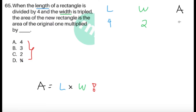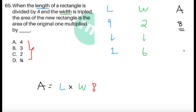Using the formula area equals length times width: 4 times 2 gives us 8. So this is the area of the original rectangle. Now, the length is divided by 4, so from 4 it becomes 1. The width is tripled, so 2 times 3 gives us 6. The area of the new rectangle is 1 times 6, which gives us a new area of 6.